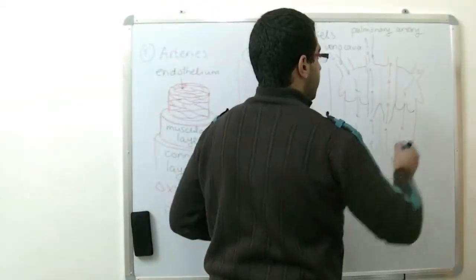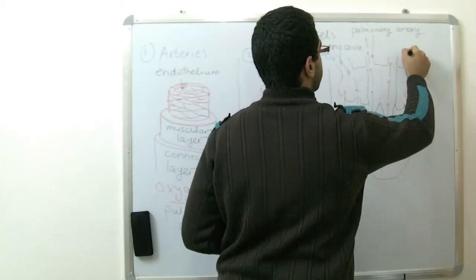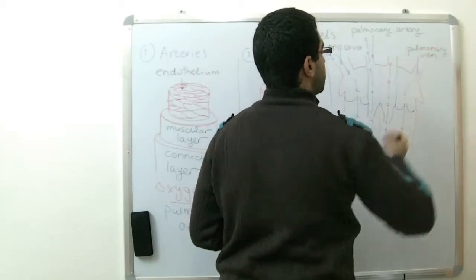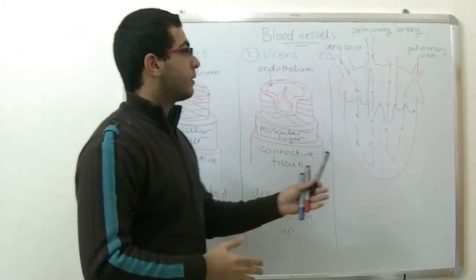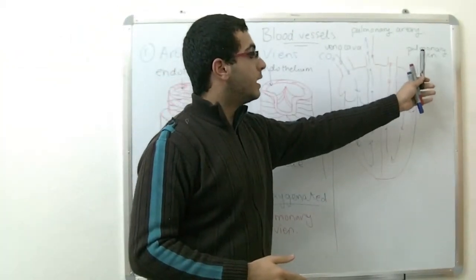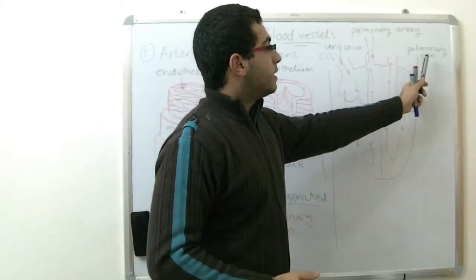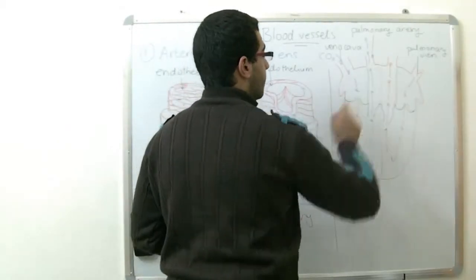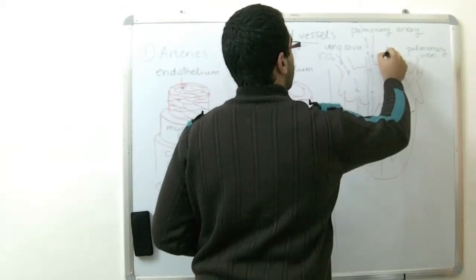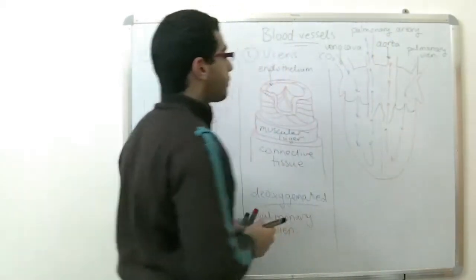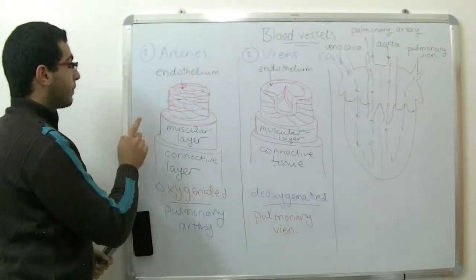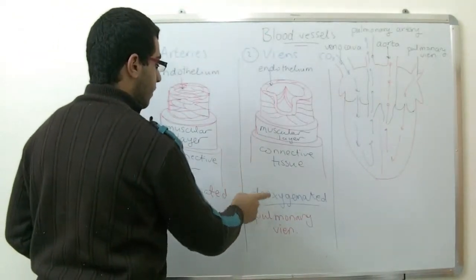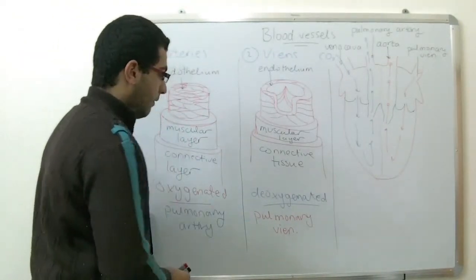So this vein is the pulmonary vein. And since the lung is a body organ, the vein transfers or transports the blood from the lungs to the heart. And this is the only case that a vein is carrying oxygenated blood. And then the blood is pumped once more through this artery, which is called the aorta. So this is why the arteries all carry the oxygenated blood except the pulmonary artery, and all the veins carry the deoxygenated blood except the pulmonary veins.